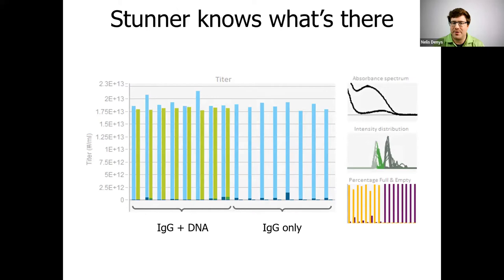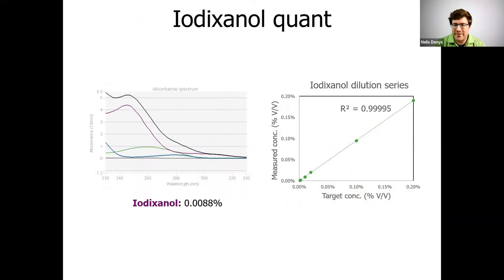If you try to fake out Stunner, this is what happens. If you put IgG and DNA together in a sample to mimic a full capsid, or just IgG alone to mimic an empty capsid, Stunner knew what was there. You can see that almost everything is in light green and light blue, because there's no capsid peak in the DLS — you can't fool Stunner. If iodixanol is part of your process, it's also useful to know exactly how much iodixanol you have in your sample and to check iodixanol concentration after each buffer exchange. Stunner can detect iodixanol in your sample as low as 0.0005% by volume.